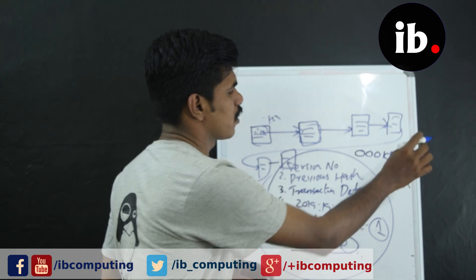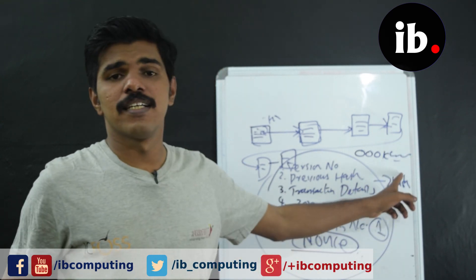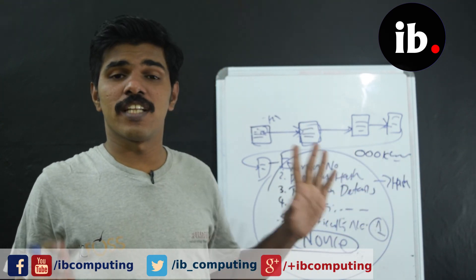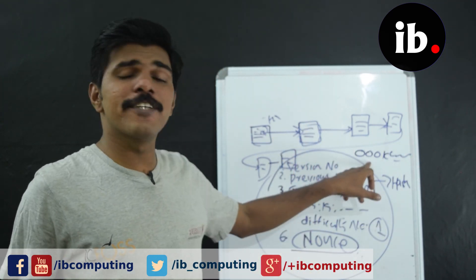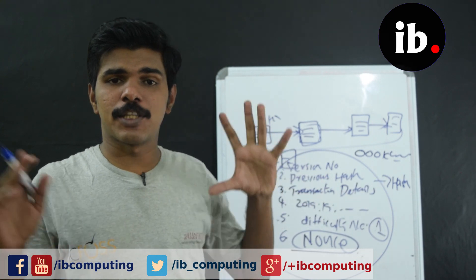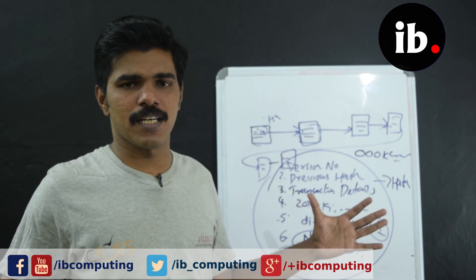Now, let's take a look at this. There is a change. There is a change in Bitcoin. Now, there is a 17-hash.